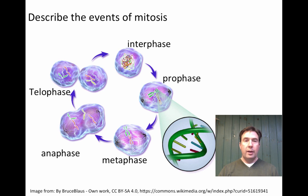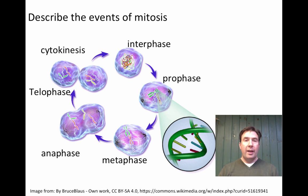During telophase, the pulling apart finishes, new nuclei form around the separated chromosomes, and those chromosomes unwind back into chromatin. We then see cytokinesis — the splitting of the cytoplasm — where the organelles are also divided so that each daughter cell ends up with its own organelles.